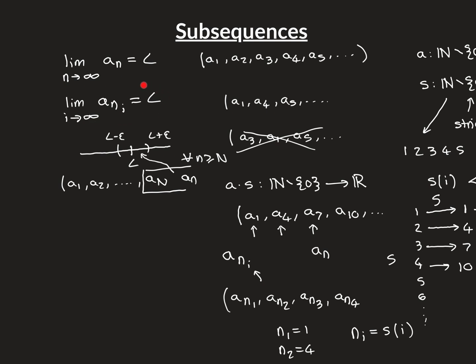So why does this mean the subsequence also satisfies the epsilon definition? We need to find a big I such that for that I and all little i's after it, the subsequence terms A_{n_i} are inside the epsilon interval. The answer is simple: just take a big I such that n_I is greater than big N. Then all those terms will be part of the tail end of the original sequence and therefore lie inside the epsilon interval.